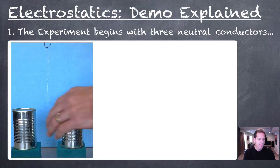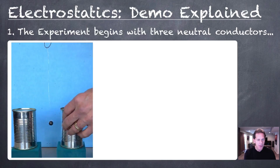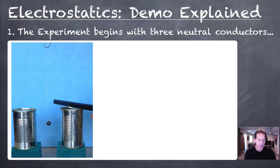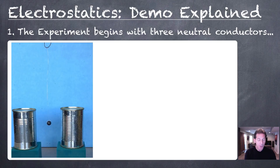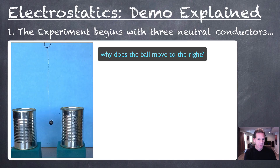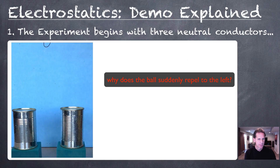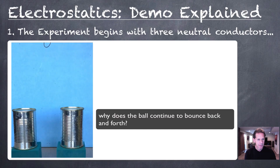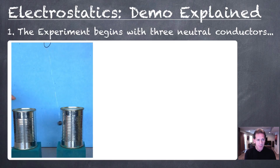We have three neutral conductors. I touch each one of them just to ensure that they are not charged. The ball in the center has been coated with graphite paint, so it is a conductor, and the thread is insulated from the ground. The amber rod is repeatedly charged and then rubbed across one of the cans. Look closely at what happens to the neutral ball. In order for this interaction to continue, I had to keep touching the can on the left-hand side to keep the ball moving back and forth between the cans.